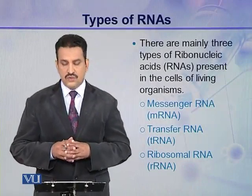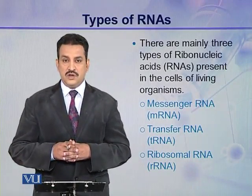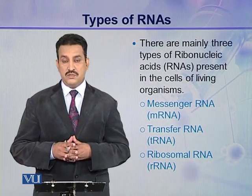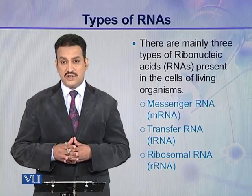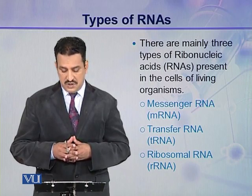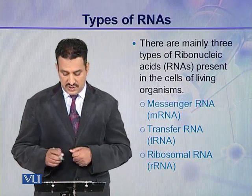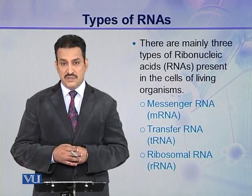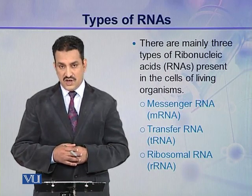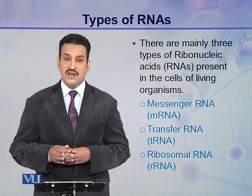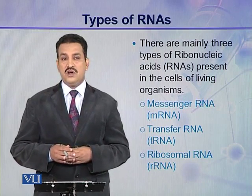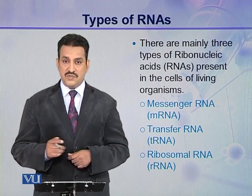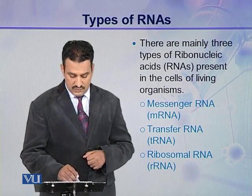Let us see different types of RNAs. As you know, only one type of DNA is present in the cells, but the ribonucleic acids are of three types present in living organisms: messenger RNA or mRNA, transfer RNA or tRNA, and ribosomal RNA or rRNA. So these three types of ribonucleic acids are present in the cells of living organisms.